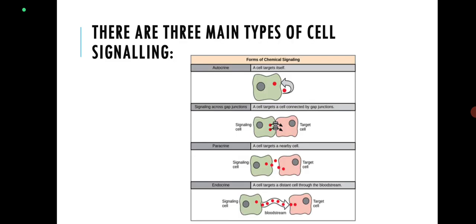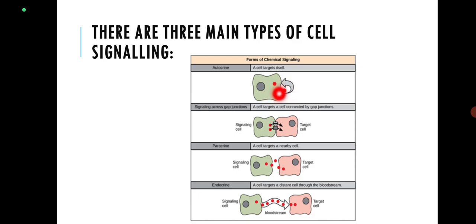There are three different types of cell signaling in multicellular organisms: autocrine signaling, paracrine signaling, and endocrine signaling. In autocrine signaling, a signaling molecule is produced by the cell and utilized by the same cell — this is the autocrine mechanism. For example, in a prokaryotic cell such as bacteria, a protein is produced that is responsible for activating certain genes within the bacterial system itself.